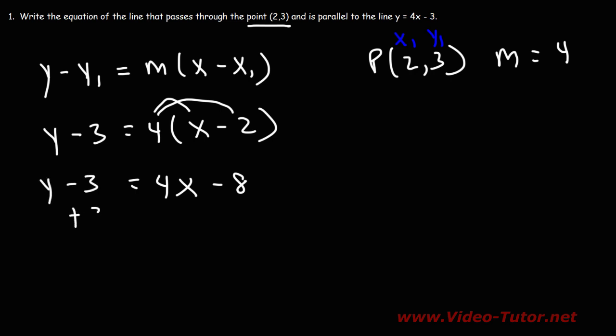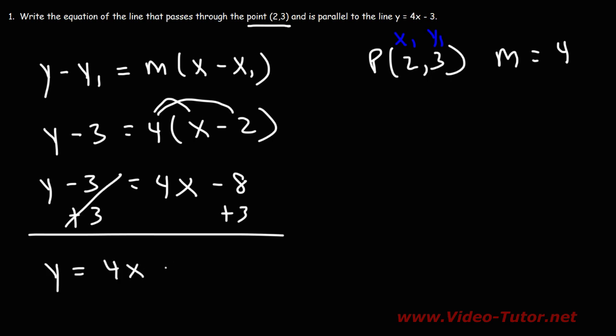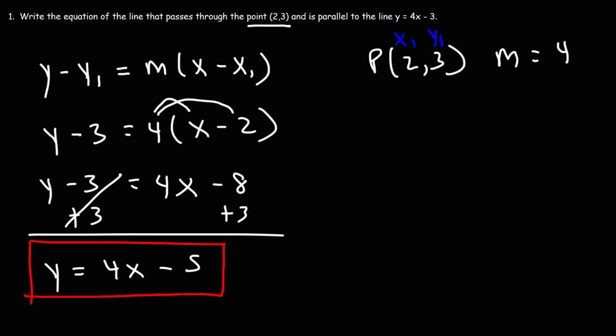Next, let's add 3 to both sides of the equation. Negative 8 plus 3 is negative 5. So the answer is y equals 4x minus 5. That is the equation of the line that passes through the point (2, 3) and is parallel to y equals 4x minus 3. We know it's parallel because both lines have the same slope, as indicated by the term 4x — they both have a slope of 4.